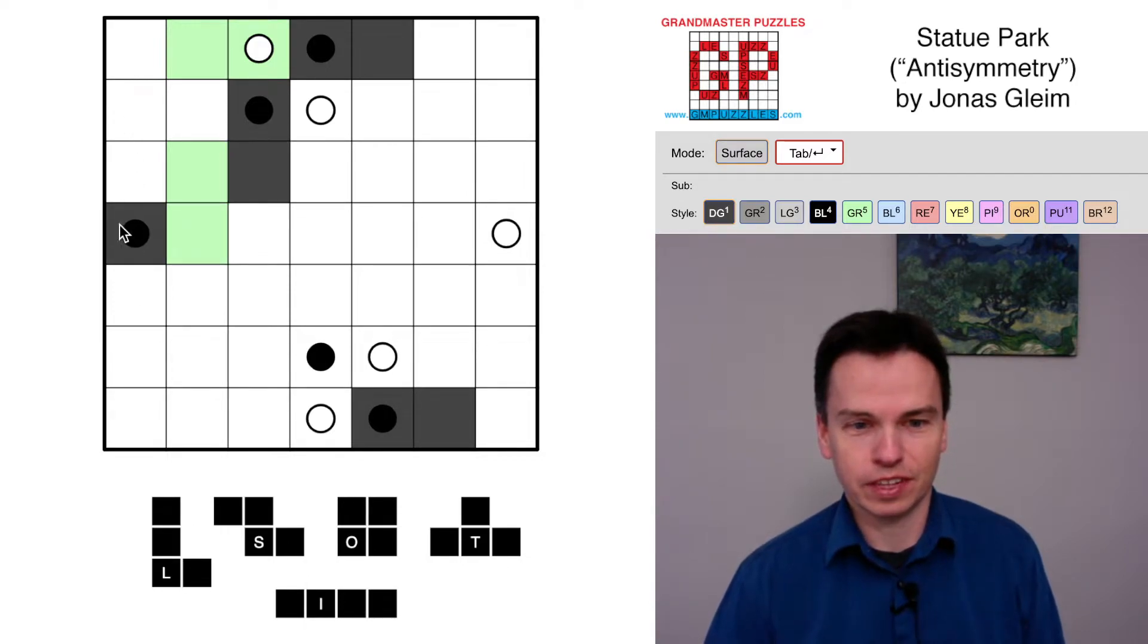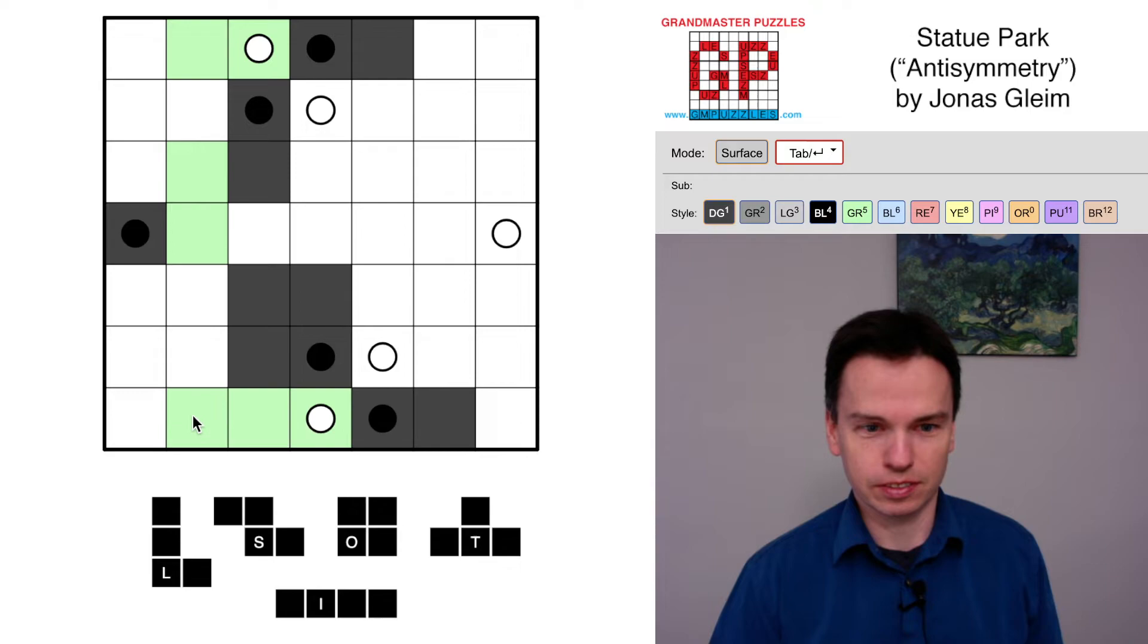At this stage, if I ask myself where does the O go, the O isn't here, it isn't here, it isn't here, and it isn't here. The only shape that can be an O is this one, so we'll mark that into the grid.